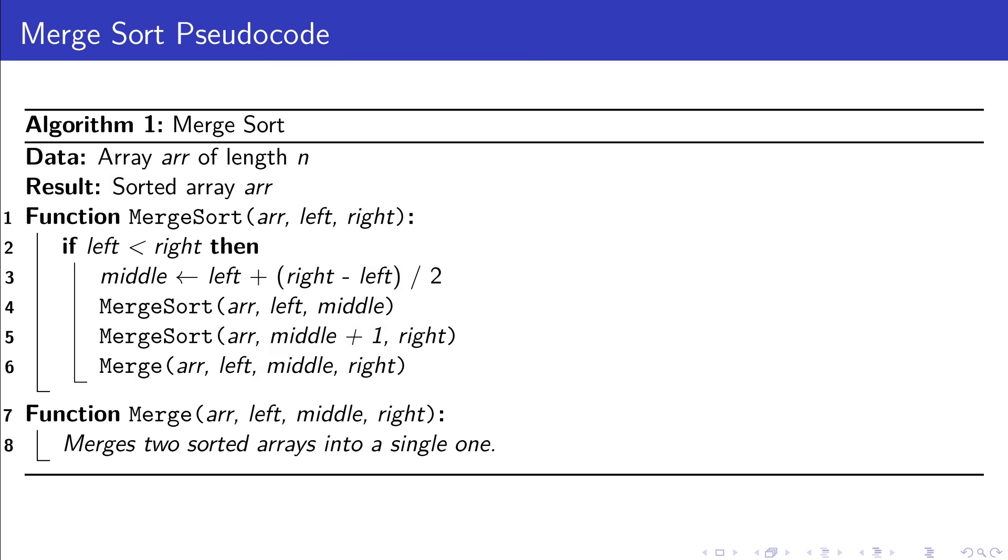Merge Sort is a divide-and-conquer algorithm that splits an array into two halves, sorts each half, and then merges them back together. In the Merge Sort function, we check if the left index is less than the right index, as a single-item array is implicitly sorted.